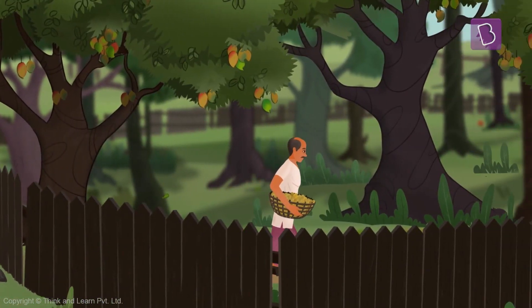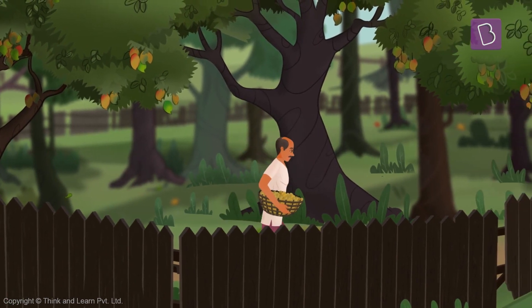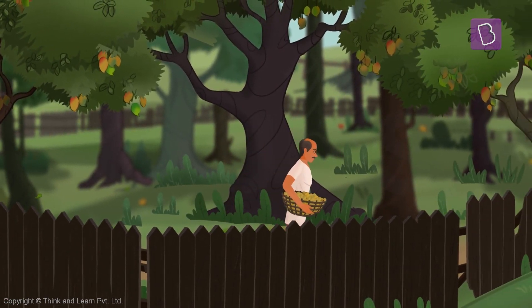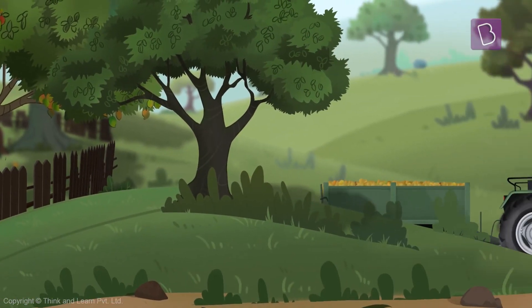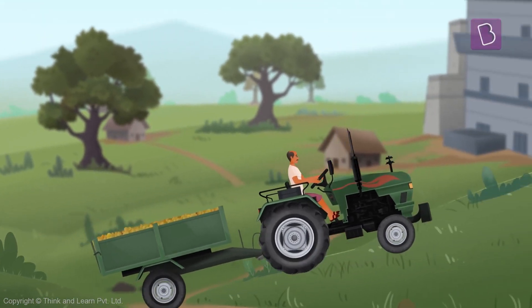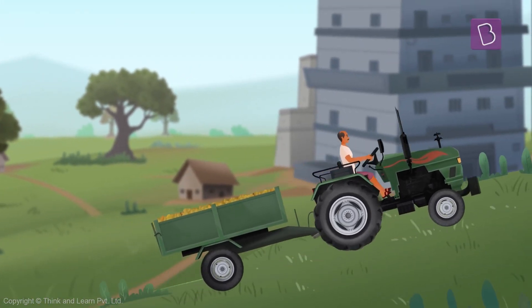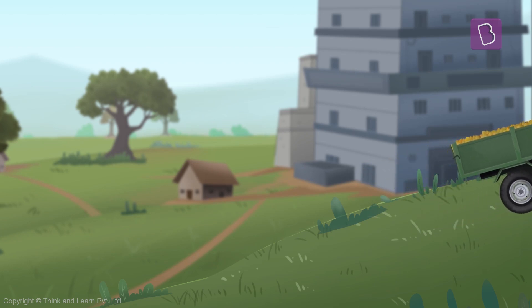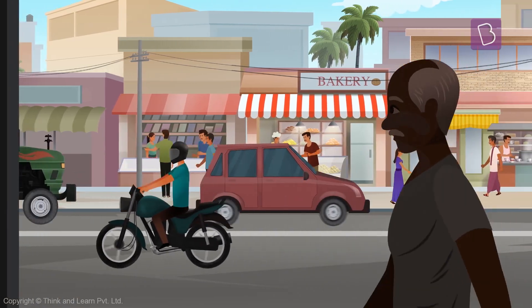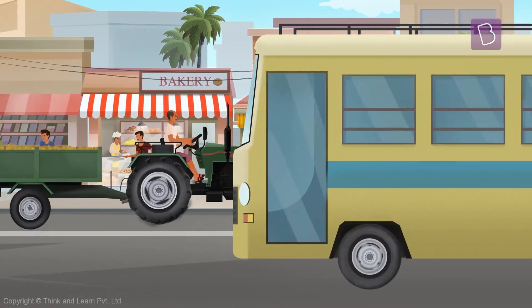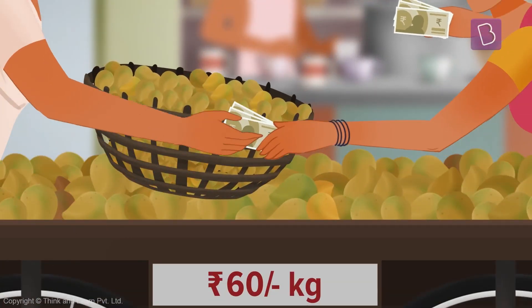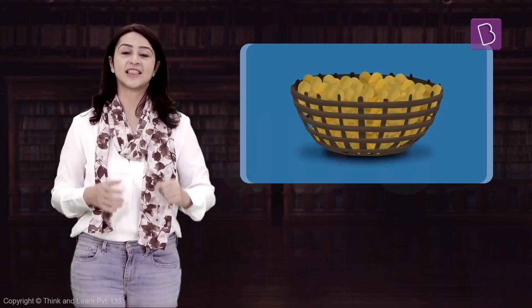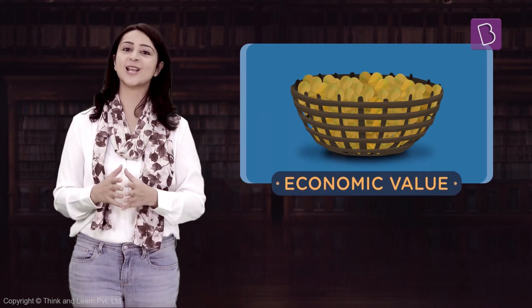The mangoes on that tree are not for free — the mango tree inside this property is owned by someone. What is he going to do with all these mangoes? Well, there are people who need these mangoes, and they will earn him some money. That is how we can say the mangoes have an economic value.